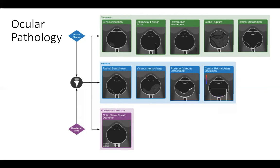Lastly, if you want to evaluate for increased intracranial pressure, you can do so by measuring the optic nerve sheath diameter. That's done by measuring three millimeters posterior to the globe itself, and any measurement less than five millimeters is considered normal, while a diameter greater than five millimeters would be a sign of increased intracranial pressure.